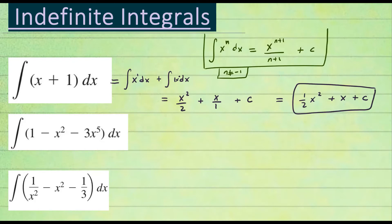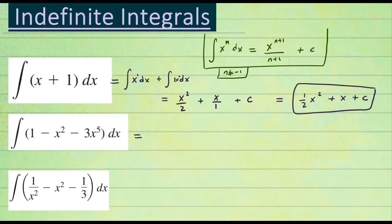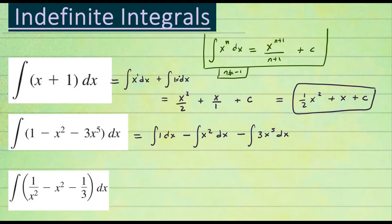For the second problem, we integrate each term separately. I'm going to split them into three separate integrals so you can see how the properties of integration apply. If you have a plus or minus in the middle, you split them into different pieces. So: the integral of one dx, minus the integral of x squared dx, minus the integral of three x to the fifth dx. Constants can be pulled outside the integration symbol.